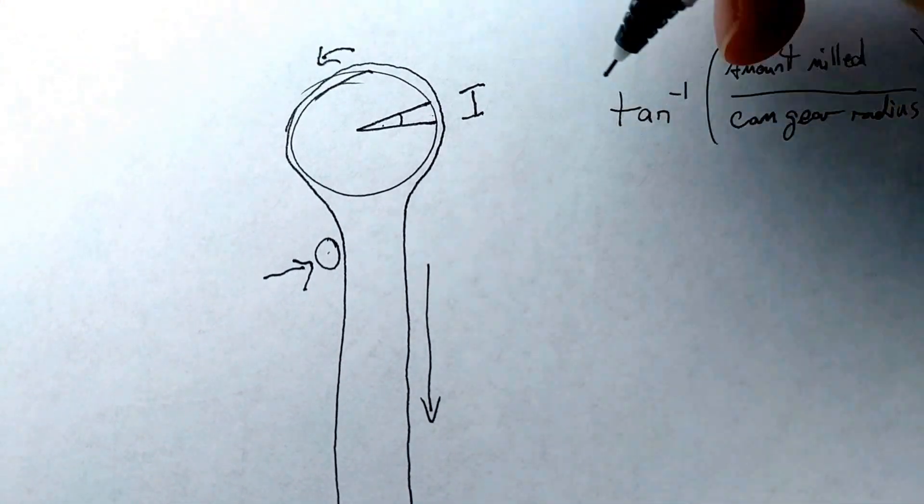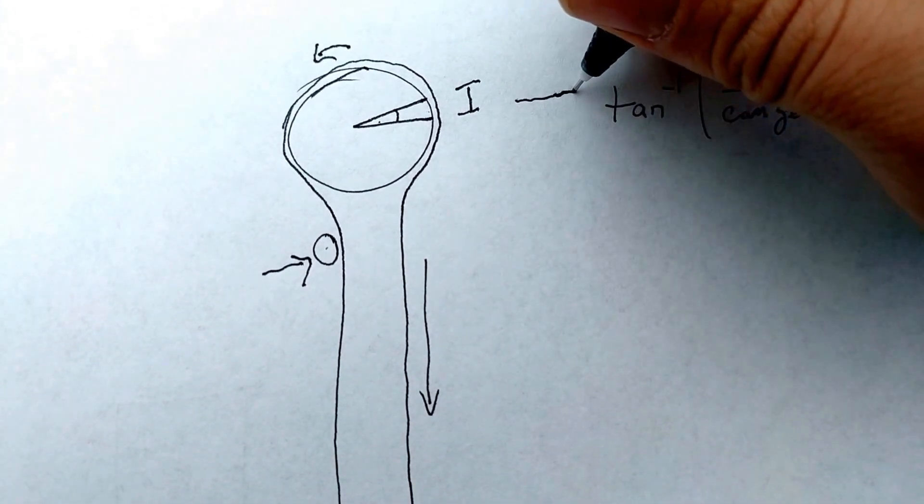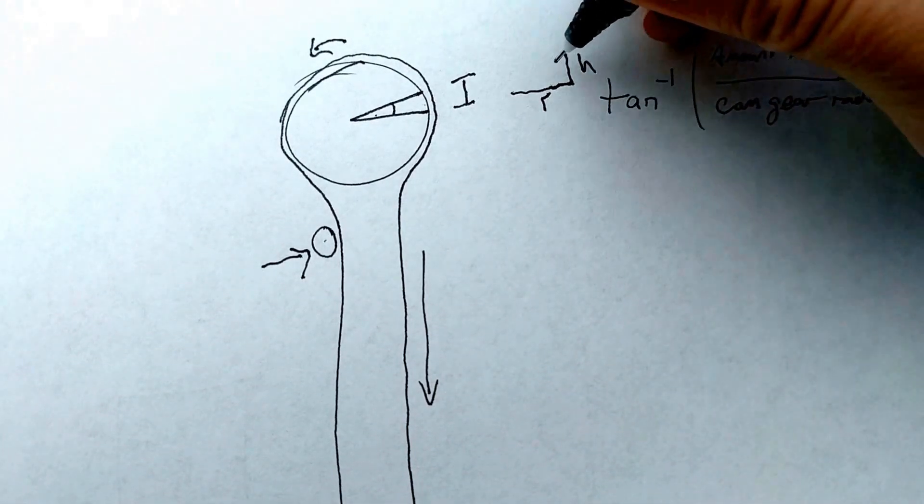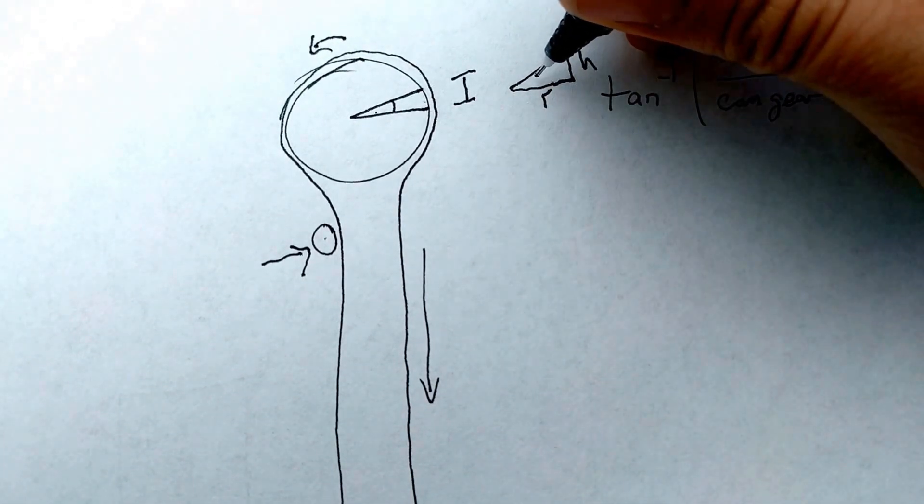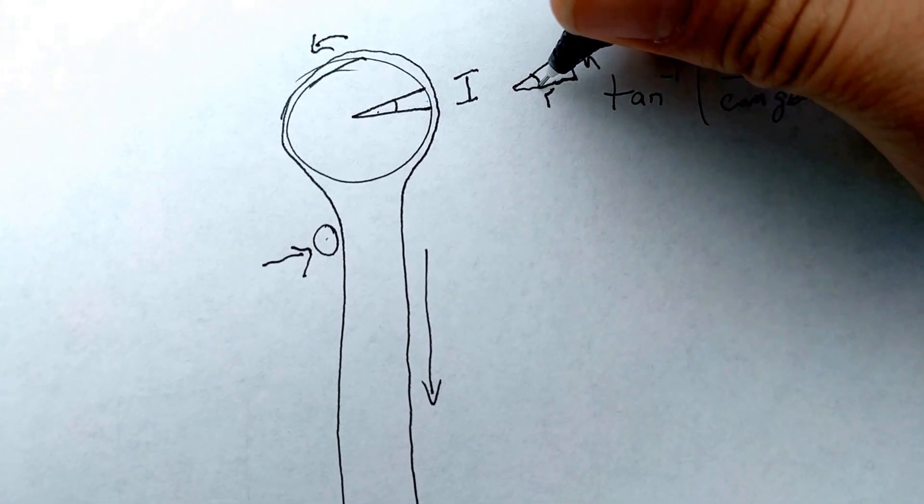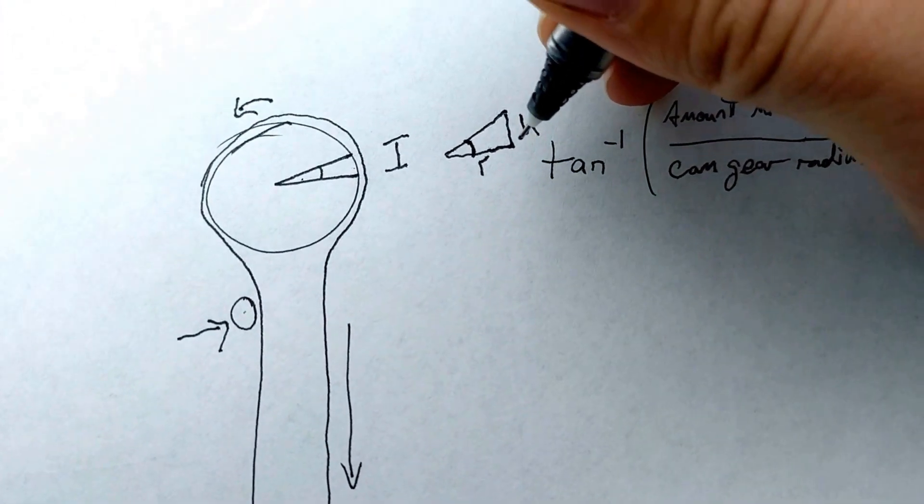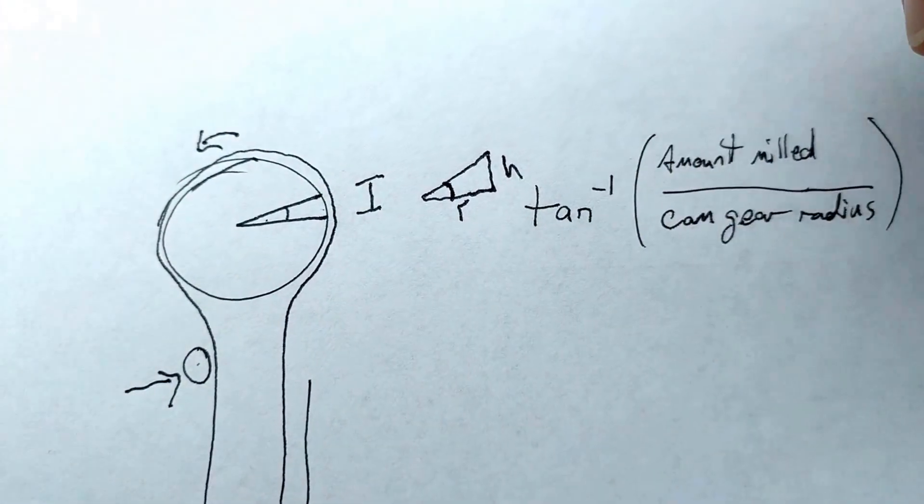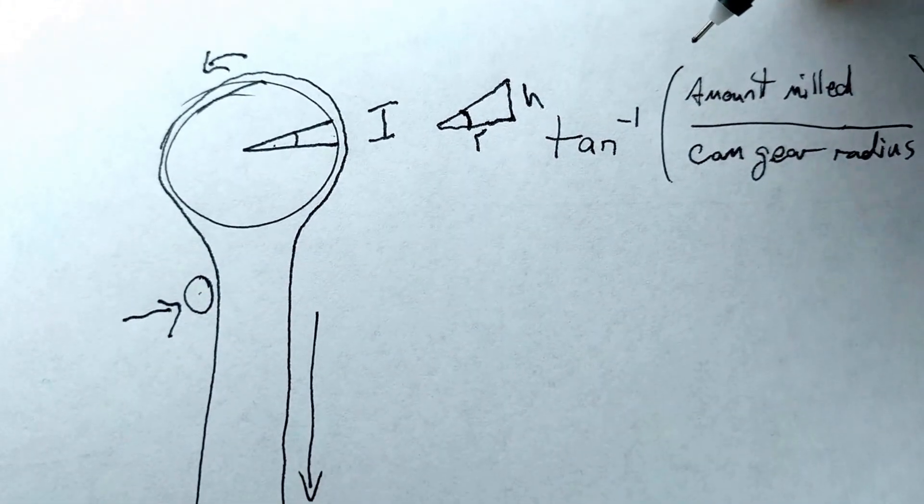And that gives you a nice triangle. There's your radius. There's your height. There's your hypotenuse. And this is the angle that you want. This is how much out of phase or retarded your cam will be.